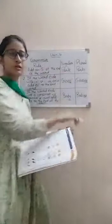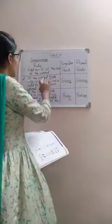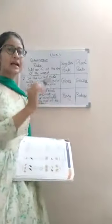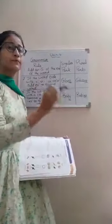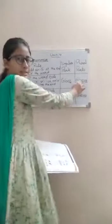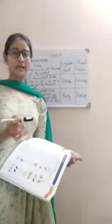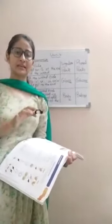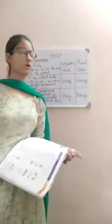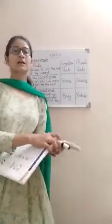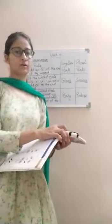I hope you all got all three rules. First rule: add S to make the plural word. Second: when the word ends with S, SH, CH, or X, we add ES. Third: if the word ends with a consonant and Y, we remove the Y and add IES to make the plural word.